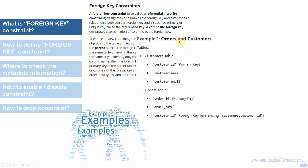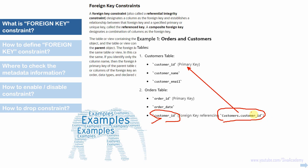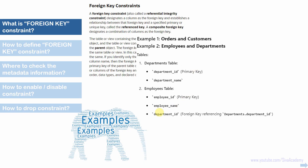Here are a few real-time examples where foreign key constraints are useful. For a customer and order table, before creating the order we should have the customer entry in the customer table. When inserting into the order table, we can ensure a valid customer exists in the customer table — that means creating a foreign key on the customer ID of the order table that refers to the customer ID of the customer table. Similarly, for employees and departments, when inserting a record into the employee table, we can ensure a valid department already exists by defining a foreign key constraint on the department ID of the employee table referring to the department ID of the department table.